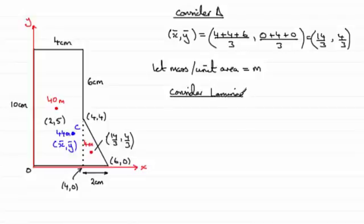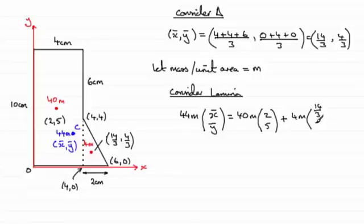Let's just mark in another subtitle here. Consider the lamina. If we do that, we're going to have the total mass, 44m, multiplied by (x̄, ȳ), equal to the moments of each of these individual masses about the x and y axis. So it's going to be 40m multiplied by the column vector (2, 5). And then, plus the moment produced from the particle here, 4m, which is going to be 4m multiplied by (14/3, 4/3). Now, the m's cancel. So we can take those out.